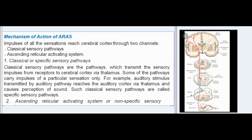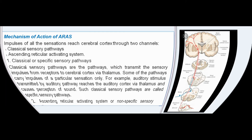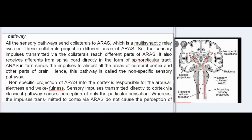ARAS as the nonspecific sensory pathway: All sensory pathways send collaterals to ARAS, which is a multisynaptic relay system. These collaterals project in diffused areas of ARAS, so sensory impulses transmitted via the collaterals reach different parts of ARAS. It also receives afferents from the spinal cord directly in the form of the spinal reticular tract. ARAS in turn sends impulses to almost all areas of the cerebral cortex and other parts of the brain — hence this pathway is called the nonspecific sensory pathway. Nonspecific projection of ARAS into the cortex is responsible for arousal, alertness, and wakefulness.